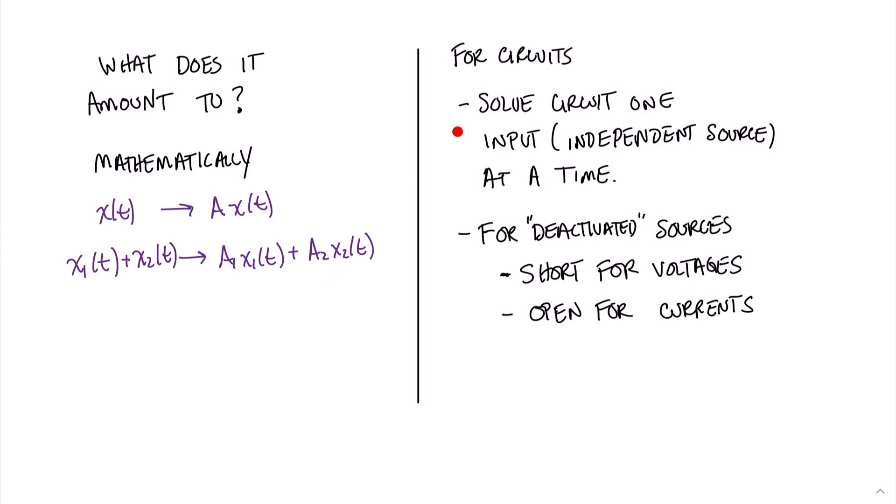When it comes to using the superposition principle on a linear resistive circuit, there's a few rules that we follow when it comes to the types of input sources. We solve the circuit one input at a time. And when we say input, we specifically mean only the independent sources. And we deactivate the other sources. And when we deactivate them, we treat voltage sources as short circuits and current sources as open circuits.